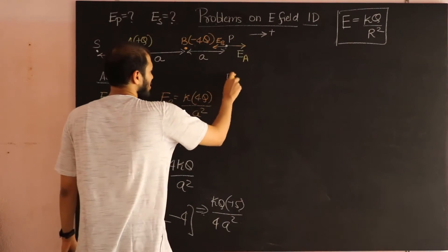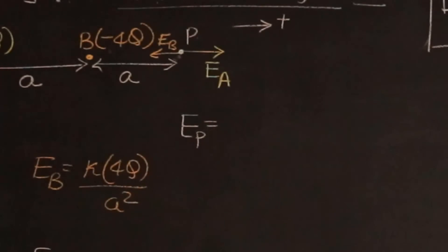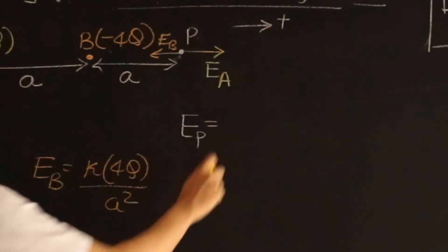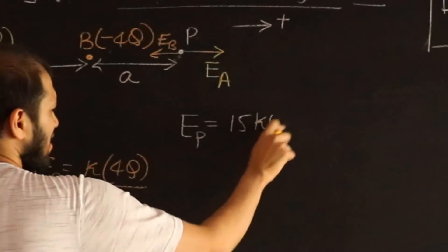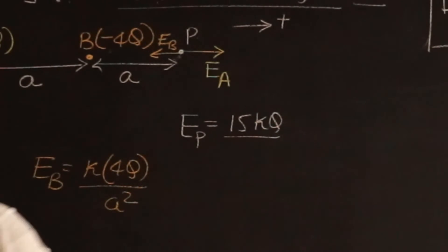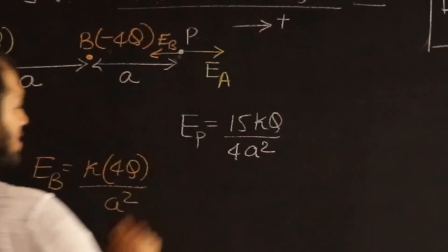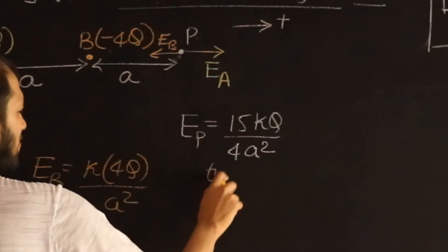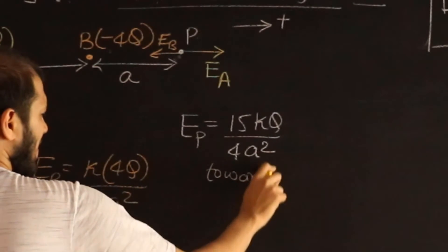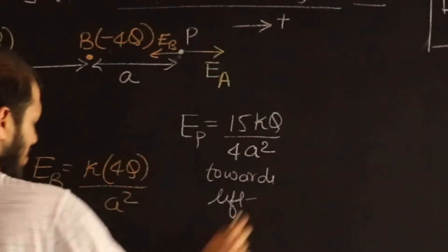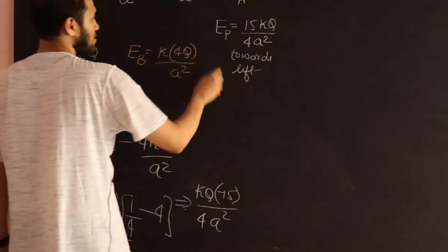The magnitude is going to be 15kq divided by 4a square. I would say towards left. The minus sign is telling me it's towards the left.